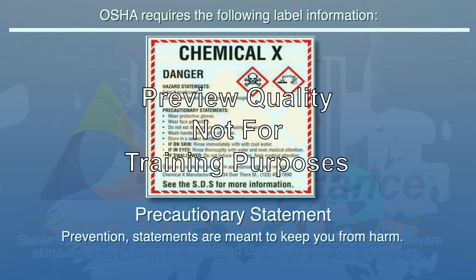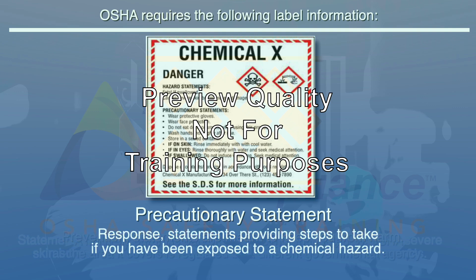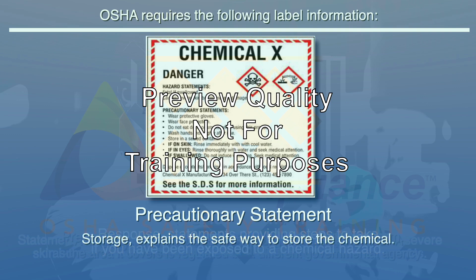Prevention statements are meant to keep you from harm, such as "do not eat, drink, or smoke when using this product" or "wear protective gloves." Response statements provide steps to take if you have been exposed to a chemical hazard, such as "if on skin, gently wash with plenty of soap and water" or "immediately call a poison center or doctor/physician." Storage statements explain the safe way to store the chemical, such as "store locked up," "store in a well-ventilated place," or "keep container tightly closed."